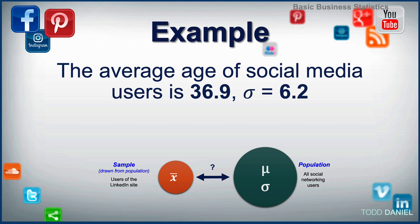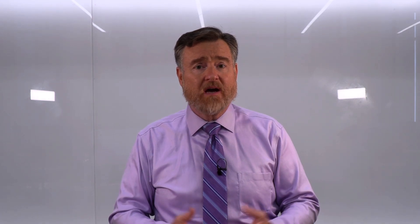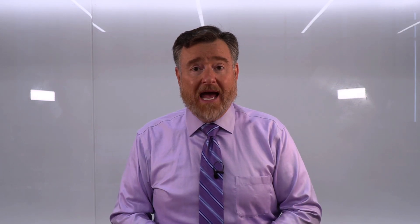Where did that population standard deviation come from? The answer is — I made it up. In this example, we did not actually have a population standard deviation because that hasn't been measured. But for this example, we're going to pretend we have both the mean and the standard deviation. In most cases that will not be true, and we will use a t-test instead. This is only being done for learning purposes.